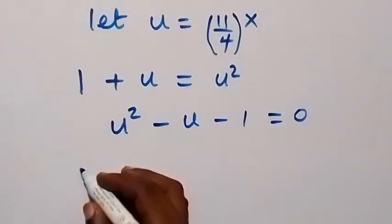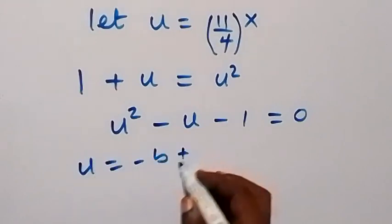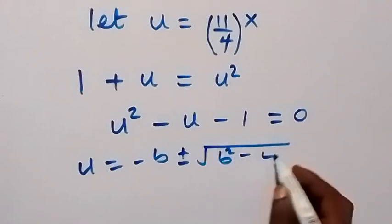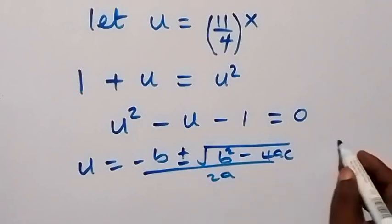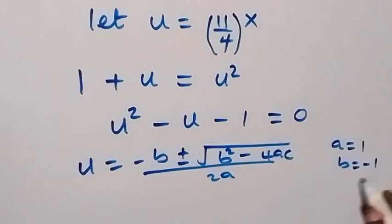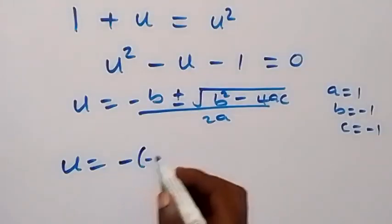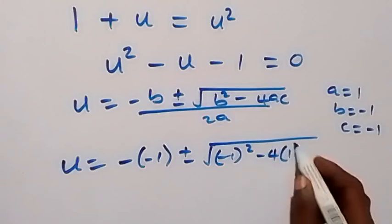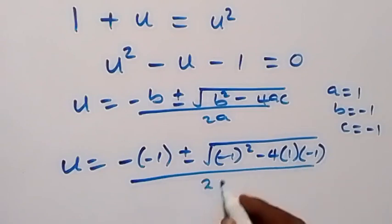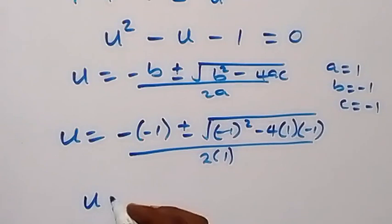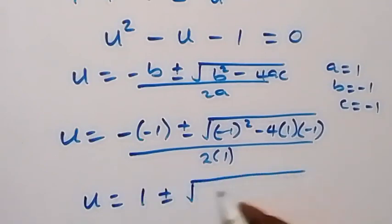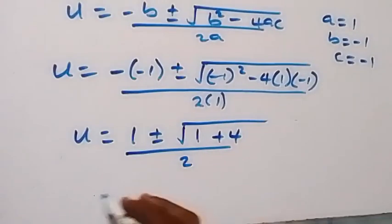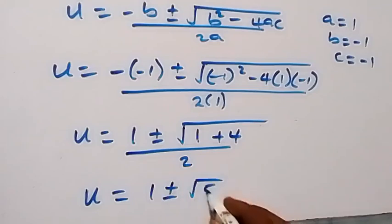Using the quadratic formula: u equals negative b plus or minus square root of (b squared minus 4ac), over 2a. Here a is 1, b is minus 1, and c is also minus 1. So u becomes minus(minus 1) plus or minus square root of ((-1)² minus 4×1×(minus 1)), over 2×1. This gives u equals 1 plus or minus square root of (1 plus 4), over 2, which is 1 plus or minus root 5, over 2.